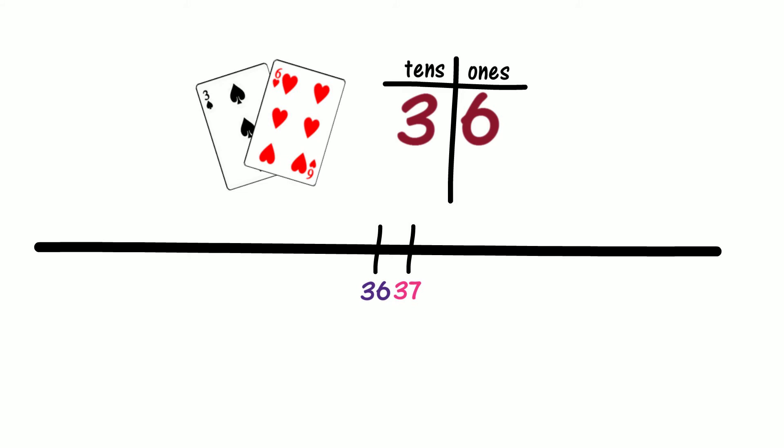If this is where 36 and 37 are on our number line, where would 35 be? Would 35 be on the left of 36? Why? Is it because 35 is one lower than 36? In what direction do numbers get lower on a number line? Do numbers get lower as we move to the left? Are 35 and 37 the same distance from 36? Are 35 and 37 both one apart from 36? Are we adding one to 36 to get 37? Are we subtracting one from 36 to get 35?